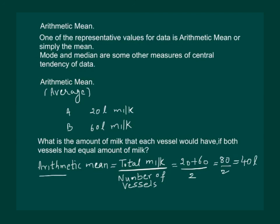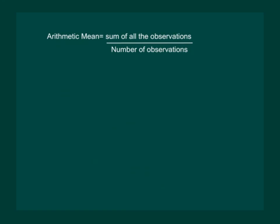So arithmetic mean is the sum of all observations divided by the number of observations. We define arithmetic mean as AM equals the sum of all observations divided by the number of observations.